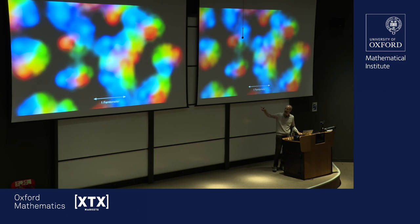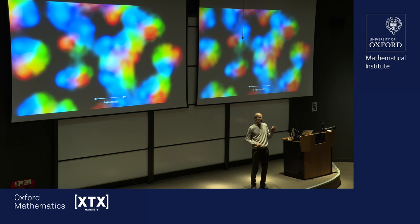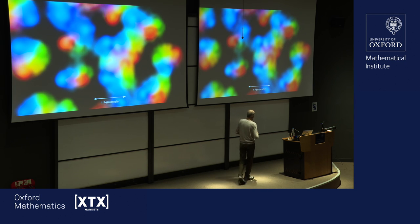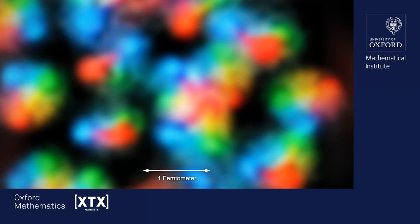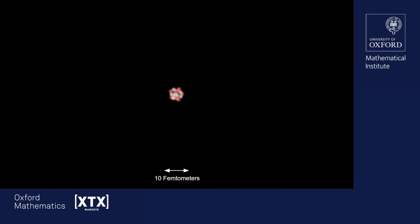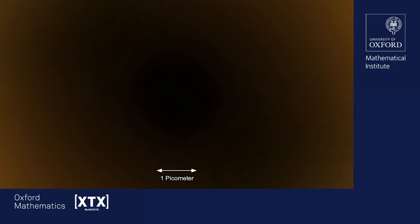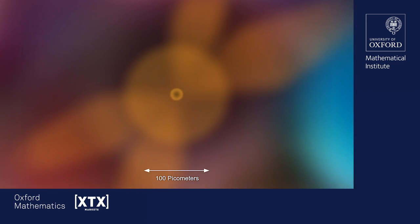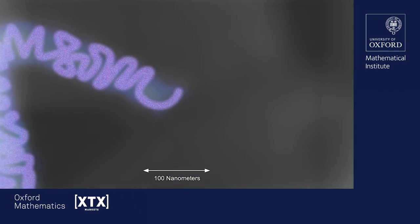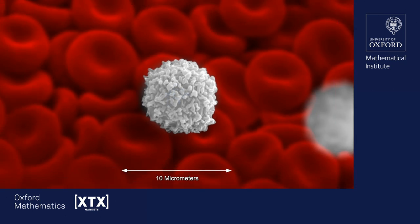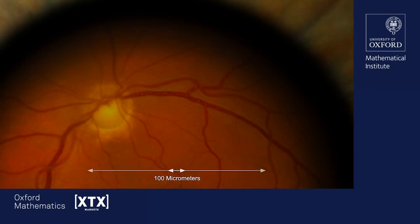The movie starts from the very smallest scale — these are supposed to be some kind of cartoon of quarks. You know, the nucleus of an atom is made up of protons and neutrons, and protons and neutrons are themselves made up of three quarks. The little splashes of color are some artistic depiction of quarks. Then we zoom out to the atomic nucleus, and in the movie every second is about a factor of 10 in size, so we're zooming out by about a factor of 10 every second. Now we're already at the size of blood cells.